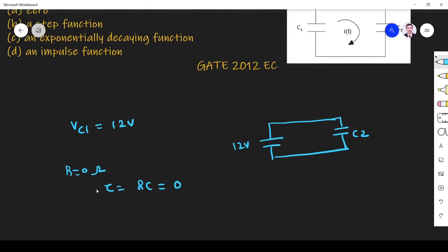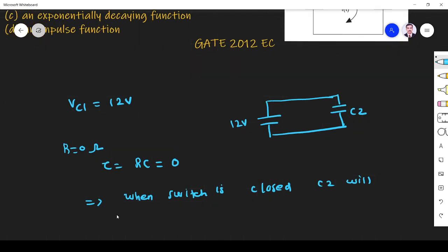Time constant 0 means what? It indicates that when switch is closed, C2 will charge immediately because time constant is 0. Time constant 0 means it will take 0 seconds to charge.